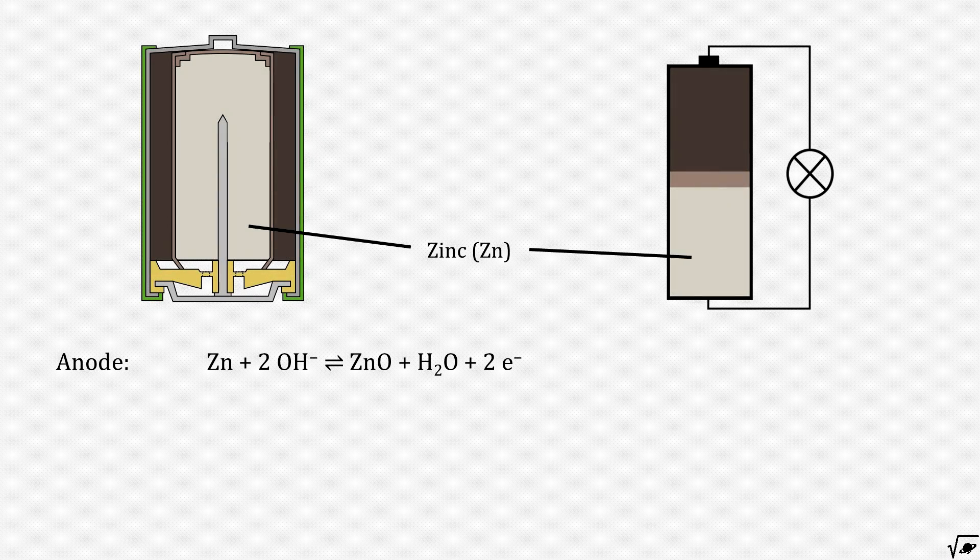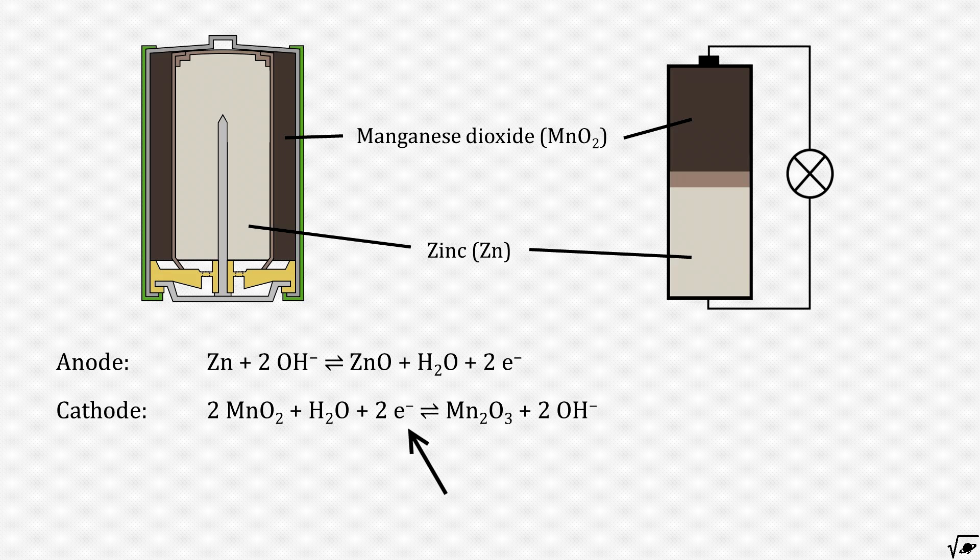Zinc, the anode, which can release electrons because of oxidation, and manganese dioxide, the cathode, which can use those electrons to start a process called reduction. The two displayed half reactions taken together result in an overall redox reaction, which releases 1.43 volts of electricity.